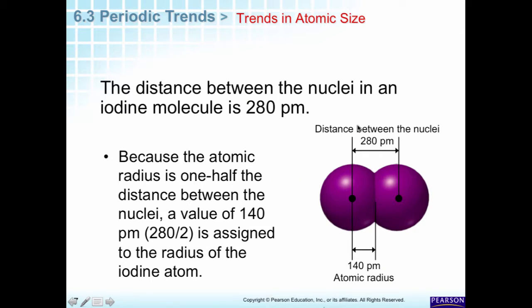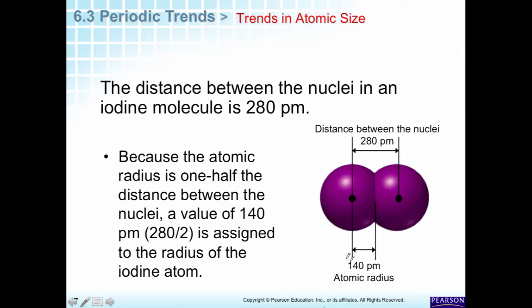Let's look at iodine. The iodine distance between two nuclei is 280 picometers. So that means iodine has a radius of 140 picometers. It's very hard to measure just one atom, so what we do is measure that full distance between two nuclei and then take the midpoint.